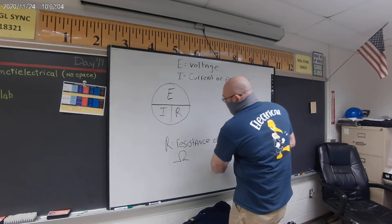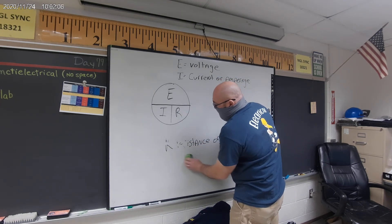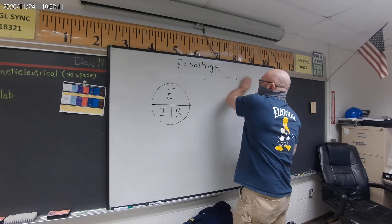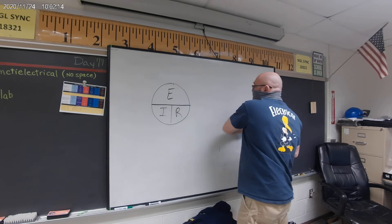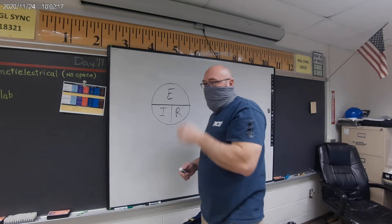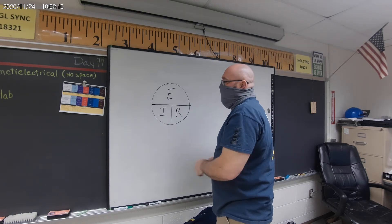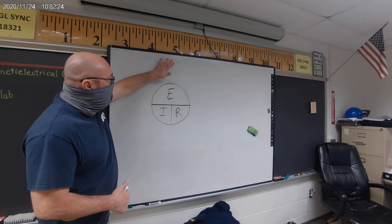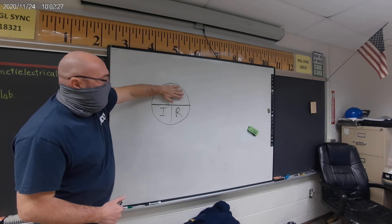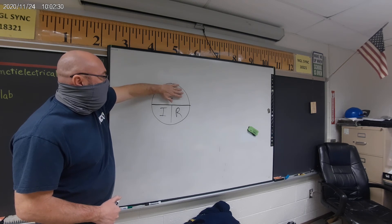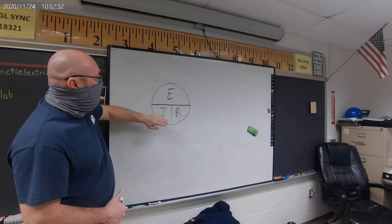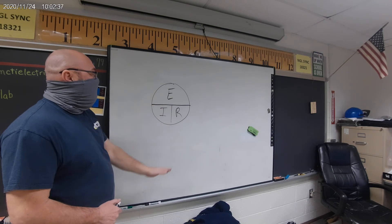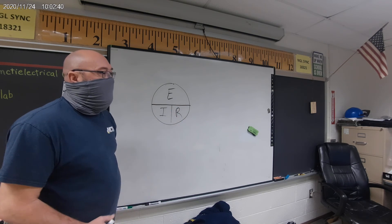So we have this here. Just like when we're using Watt's Law for the wheel, if I'm trying to find the voltage, the easiest thing to do is just cover the one I'm trying to find. So if I'm trying to find voltage, it's going to be I times R. If I'm trying to find the current, it's going to be E divided by R. If I'm trying to find the resistance, it's E divided by I.